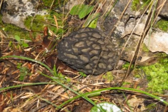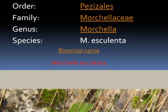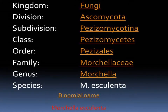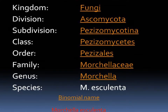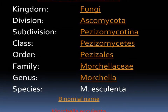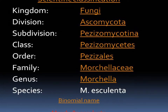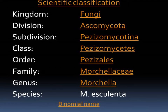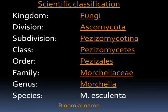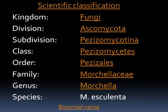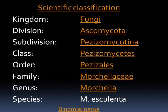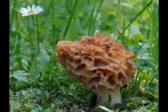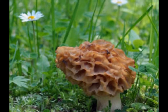The taxonomy hierarchy, or scientific classification, that this type of mushroom belongs to is: Kingdom Fungi; Phylum or Division Ascomycota; Subphylum or Subdivision Pezizomycotina; Class Pezizomycetes; Order Pezizales; Genus Morchella; Species esculenta. Its binomial name is Morchella esculenta.